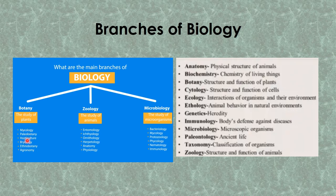Under each branch we have other specialized areas of study. Under botany we have mycology, horticulture, and ethnobotany. Under zoology we have ornithology, ichthyology, anatomy, and physiology. Under microbiology we have bacteriology, mycology, phycology, nematology, immunology, and so on.